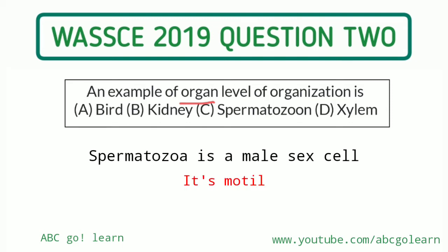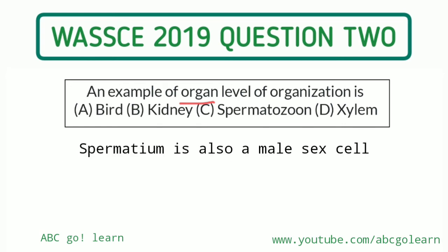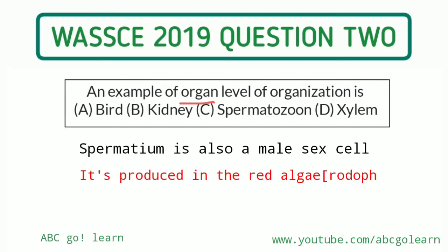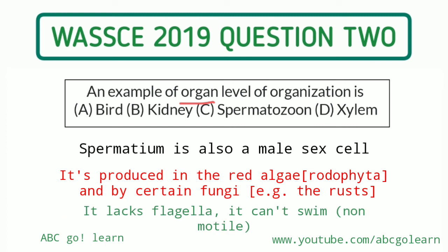Because spermatozoon has flagella, it can swim — it is motile. But there is another male sex cell that doesn't move and doesn't have flagella. That one is called spermatium. Spermatium is a male gamete produced in red algae and also found in rust fungi. To recap: spermatium lacks flagella so it cannot swim, but spermatozoon, which is found in the human body, has flagella so it can swim — it is motile. Spermatium is non-motile.